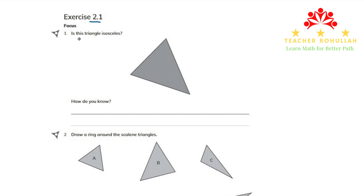The first question in this exercise is asking if this is an isosceles triangle or not. It says: is this triangle isosceles? Having a look at the triangle, we can find out that this side and this side are of equal sizes, but this side is different. A triangle in which two sides are of equal sizes is called an isosceles triangle. So I can say yes, it is.